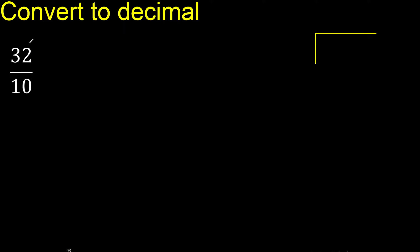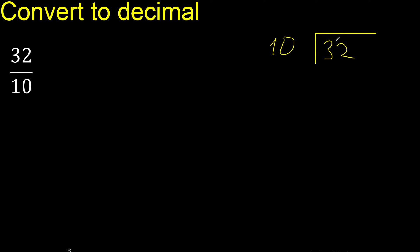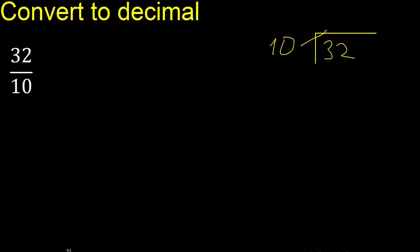32 divided by 10. 32 is not less than 10, therefore 10 multiplied by which number is nearest to 32 but not greater?